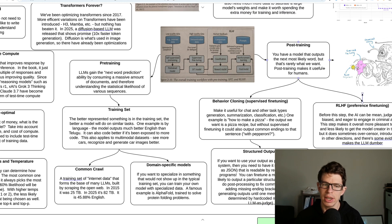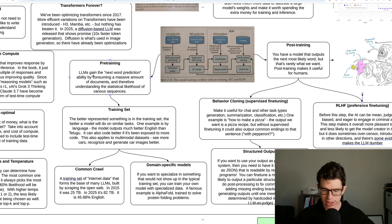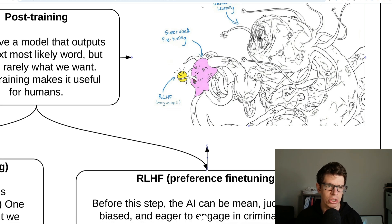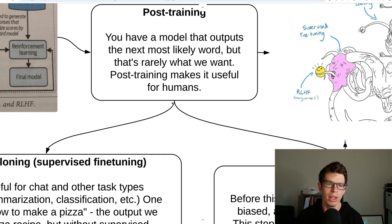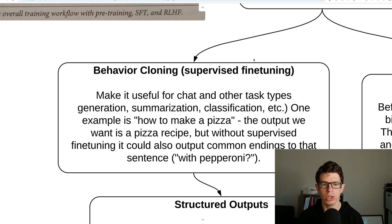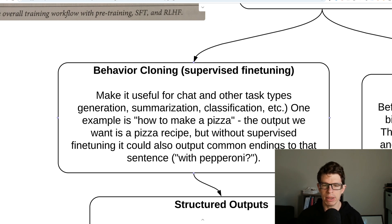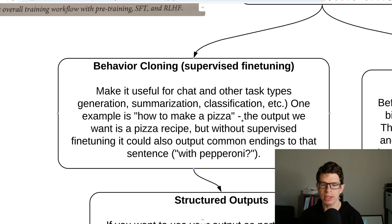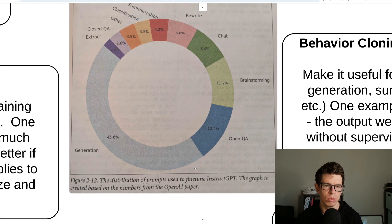Post-training is what happens after you've created all these weights — a giant mass of linear algebra that has a shape, but it's not really a human shape, and we're trying to make it human-shaped. One of the things we do is behavior cloning — we try to tell it how to accomplish various tasks. If you say 'how to make a pizza' to something that has not had post-training, it'll just complete the next word — maybe 'how to make a pizza with pepperoni?' — and we don't want it to complete that sentence, we want it to answer our question and generate a pizza recipe.